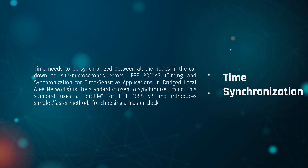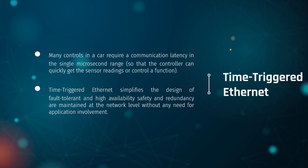Time synchronization is a must — it needs to be synchronized between all nodes in the car. The IEEE 802.1AS timing and synchronization standard for time-sensitive applications in bridged local area networks synchronizes timing using a profile that introduces simpler, faster methods for choosing a master clock. Time Triggered Ethernet addresses the requirement that many car controls need communication latency in the single microsecond range so controllers can get sensor readings to control vehicle functions. For self-driving cars, this is critical. Time Triggered Ethernet simplifies design, creates fault tolerance and high availability, with safety and redundancy maintained at the network level without application involvement.